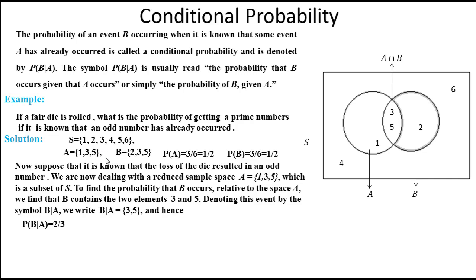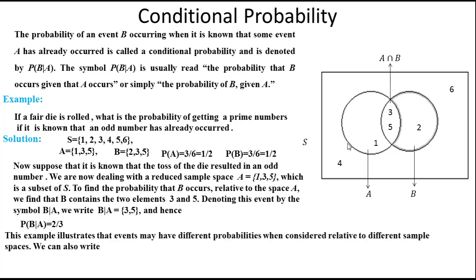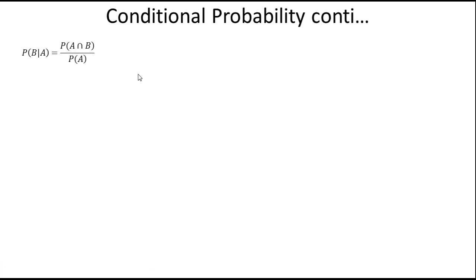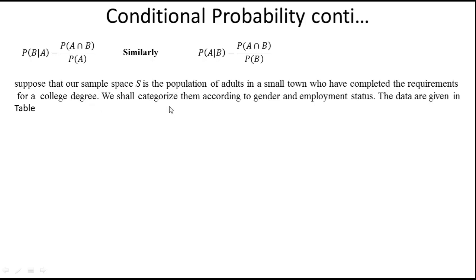This means an event may have different probabilities when considered relative to different sample spaces. We can write P(B|A) = 2/3. By dividing numerator and denominator by six, we get P(A∩B) in the numerator and P(A) in the denominator, since A∩B = {3,5} gives P(A∩B) = 2/6. So the formula for conditional probability is P(B|A) = P(A∩B) / P(A). Similarly, P(A|B) = P(A∩B) / P(B), and the given event always appears in the denominator.